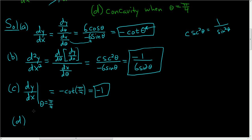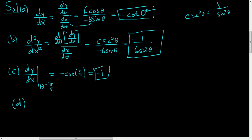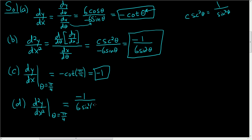Part D is probably the hardest part of the problem. We want to find the concavity when θ = π/4, so we evaluate the second derivative at π/4. The first derivative gives us the slope; the second derivative tells us the concavity. Replacing θ with π/4, we get negative 1 over 6 sine cubed of π/4. The sine of π/4 is √2/2, so this becomes negative 1 over 6 times (√2/2) cubed.